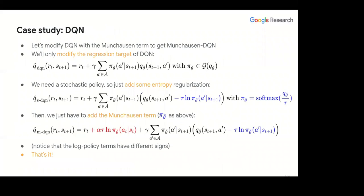As a case study: modifying DQN with the Munchausen term gives Munchausen DQN (M-DQN). The regression target of standard DQN is augmented with α·τ·log π(a|s) clipped appropriately, making the modification minimal while incorporating the theoretical benefits of KL regularization into a practical deep RL algorithm.